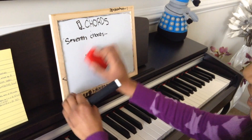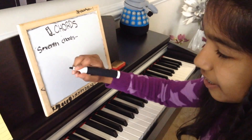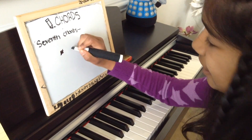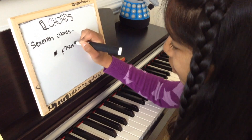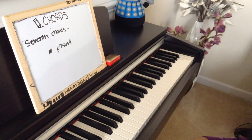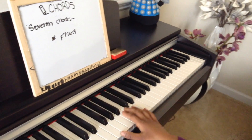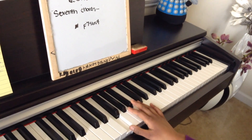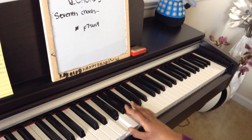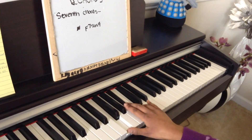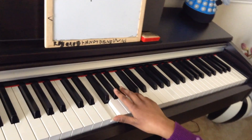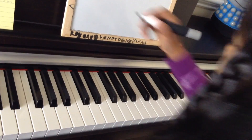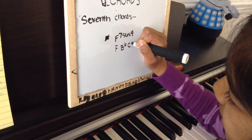The last type of seventh chord is the suspended dominant, written as F seven sus four, or just F seven sus. You take your F sus chord — moving the third to the fourth — and then add on your flat seven because it's a sus dominant. So you have F, B flat, C, E flat.